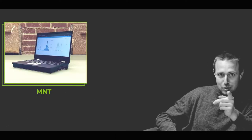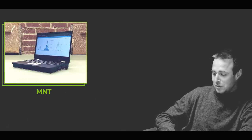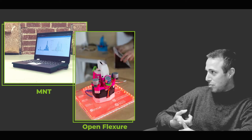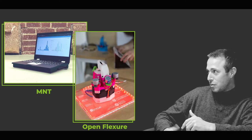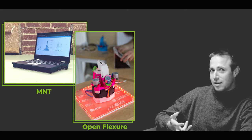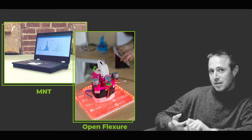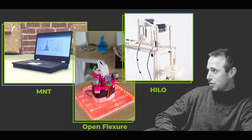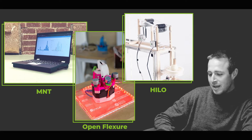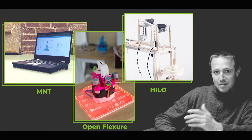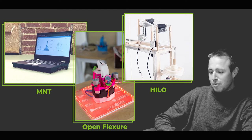We had the MNT Reform laptop — check it out. The OpenFlexure microscope, which is really cool, a 3D printable microscope. And the Elo spinning machine, for example, which I pronounced wrong the whole time of the program. Lots of interesting projects, just to name a few.